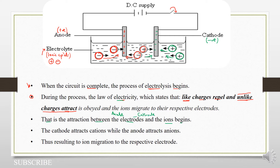While our ions, we have the positively charged and the negatively charged. So the positively charged ions will move to the negative electrode, which is the cathode, while the negatively charged ions will move to the positively charged electrode, which is the anode.